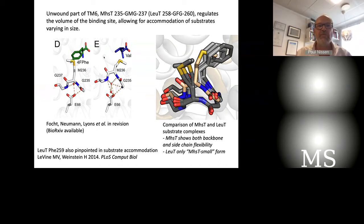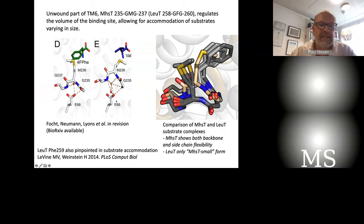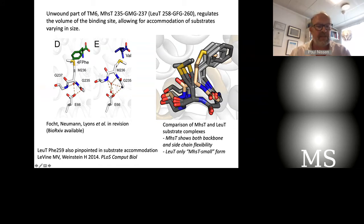The central residue is a phenylalanine in LeuT and a methionine-236 in MHST in the middle of this switching motif — GMG or GFG motifs that had also been pinpointed earlier by molecular dynamics simulations in the Weinstein group. At the same time, we see a dynamic change of water-mediated interaction networks that accommodate interactions with a completely conserved glutamic acid residue in the middle of the structure of SLC6 transporters — conserved in all of them — which seems important for dynamic interchange of hydrogen bonding patterns, probably involved in dynamic processes associated with transport.